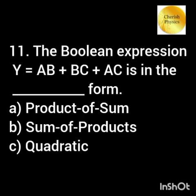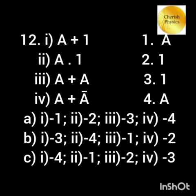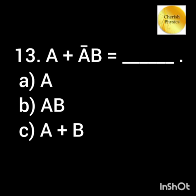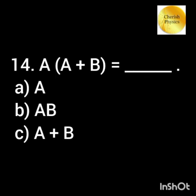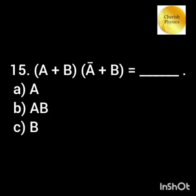What is the form of the given Boolean expression Y = AB + BC + AC? Match the answers with their corresponding Boolean equations: A + Ā·B equals — dash. A·(A + B) equals — dash. (A + B)·(Ā + B) equals — dash.